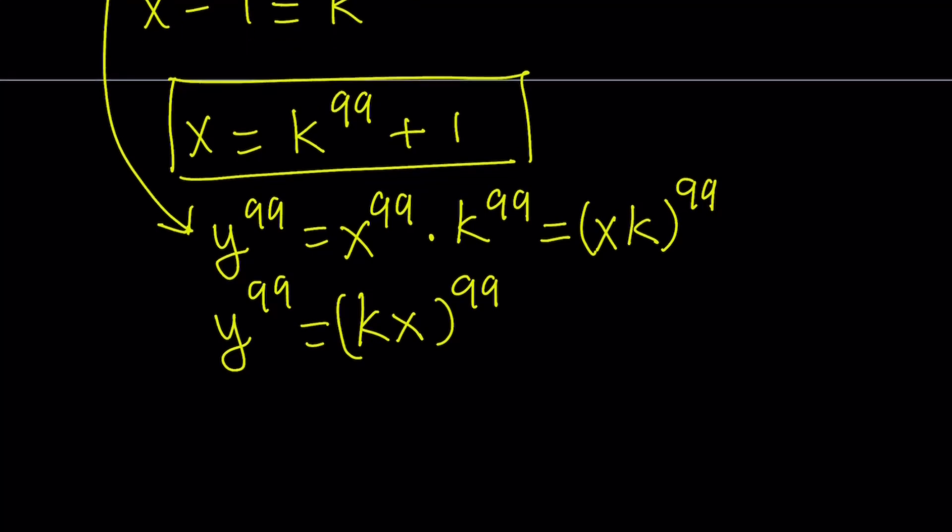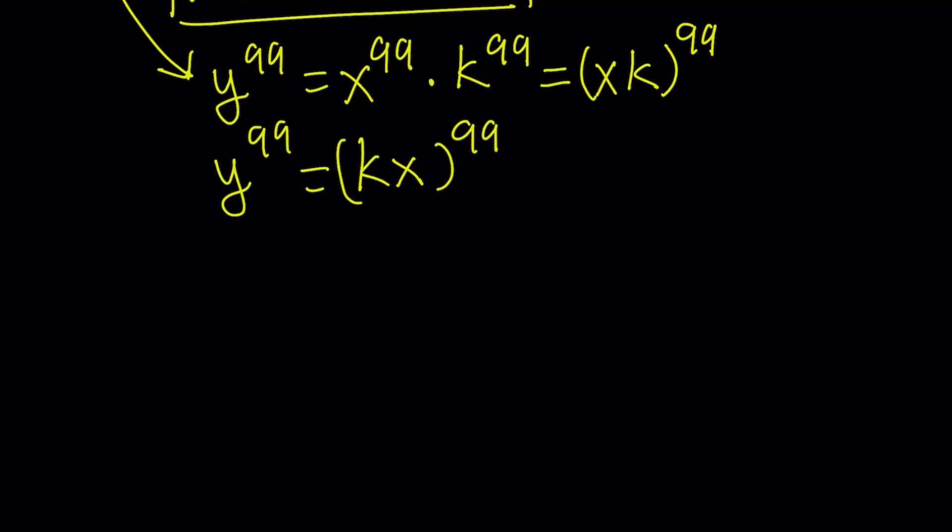And now we can take the 99th root of both sides, which is fine, right? It doesn't matter because 99 is odd, so even if we have a negative number inside, it's going to be okay. So when you take 99th root, you're going to get y equals kx.